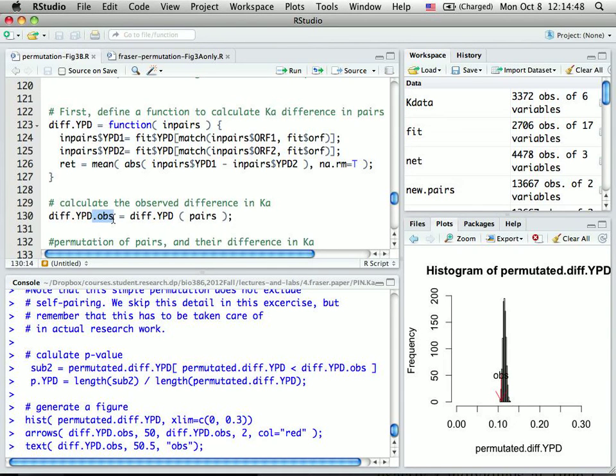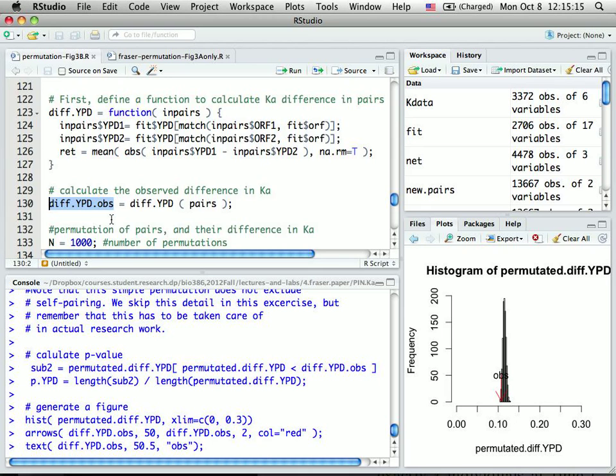I now need to permutate my random pair many times and calculate the random permuted YPD many times and generate a histogram, and then look at how many of those simulated absolute average absolute fitness differences are more extreme than observations. That's the definition of p-value.